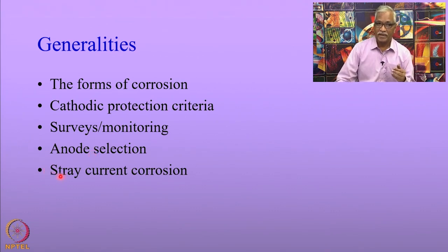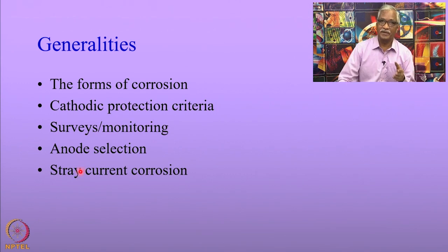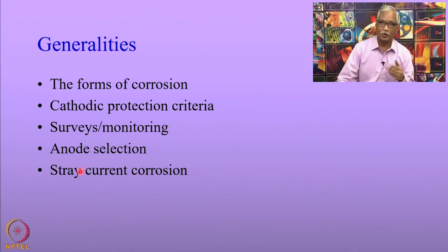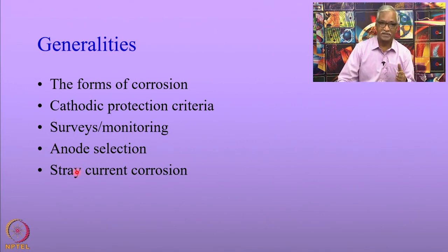Storage tanks also suffer from stray current corrosion because current strays from the anodes of the cathodic protection systems to other structures and then returns back to the storage tanks. These are generalities which we will not be discussing in this lecture.